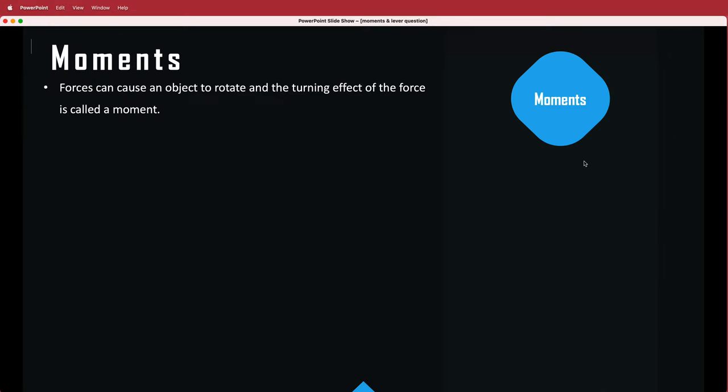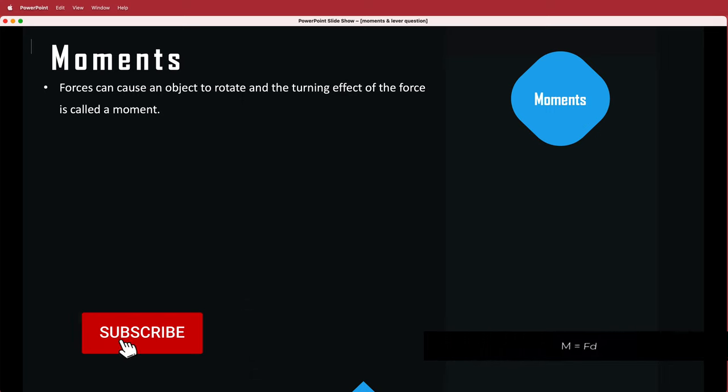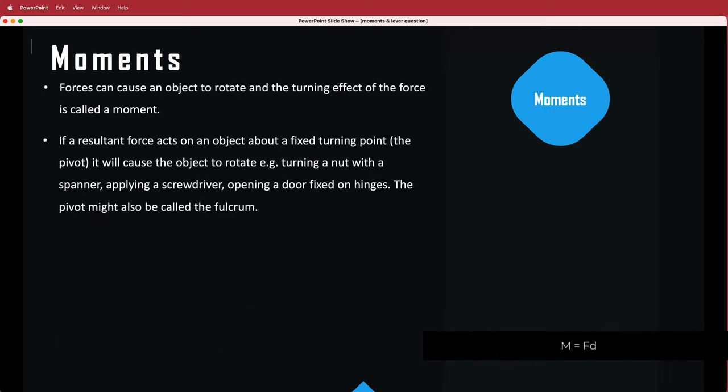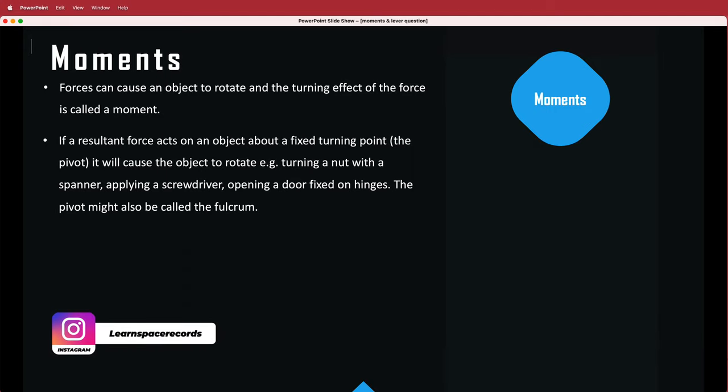So the first thing that we need to know is what is a moment. Basically, forces can cause an object to rotate and the turning effect of the force is called a moment. If a resultant force acts on an object about a fixed turning point, the pivot, it will cause the object to rotate.